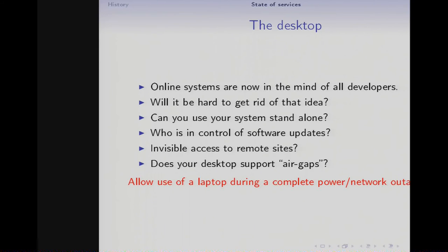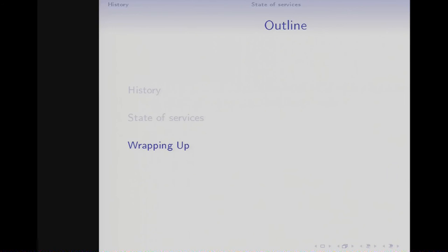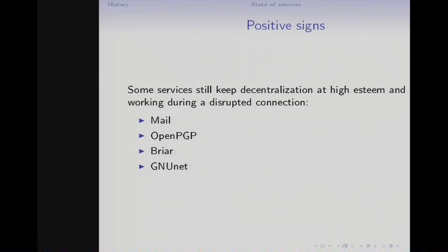Despite my negative comments, there are also positive signs. Mail is still a really nice system that works very well — it's decentralized and works with disrupted communication. Same for OpenPGP. Not the same for X.509 or S/MIME, because they require centralized services.